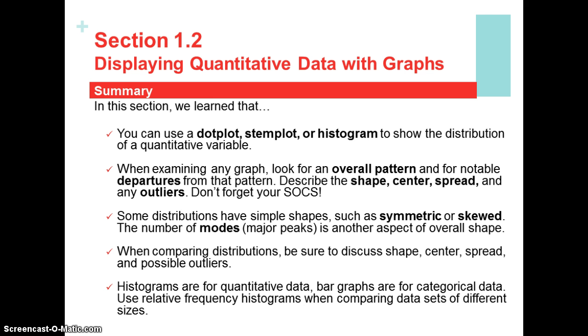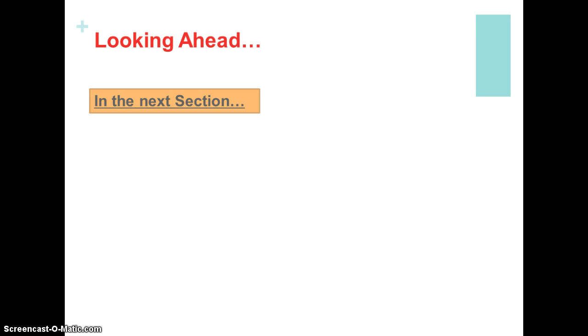So what have we learned in this section? You can use a dot plot, stem plot, or histogram to show distribution of quantitative variables. We always want to describe GSOCS for the overall pattern, which includes shape, center, spread, outliers, and gaps. Remember, outliers and gaps are departures from the pattern. We can also describe the distribution as unimodal, multimodal, bimodal, or uniform. Also with regard to its symmetry, either going to be symmetric or skewed. And histograms are for numerical data, bar graphs are for categorical data.